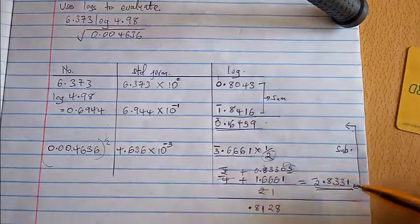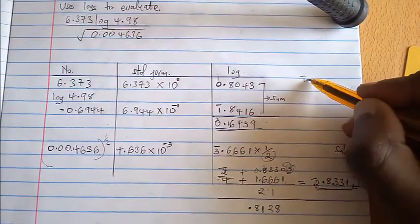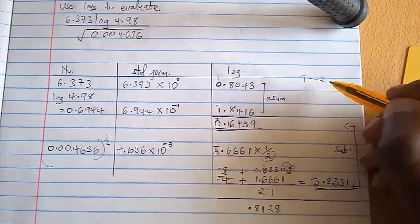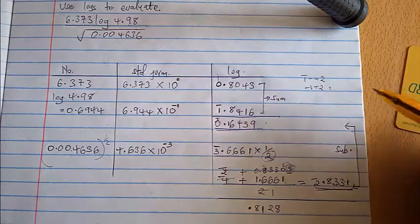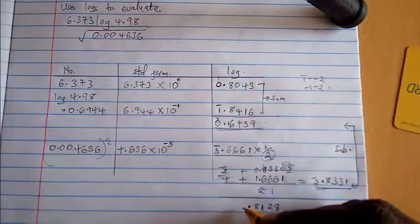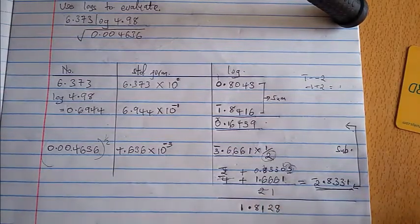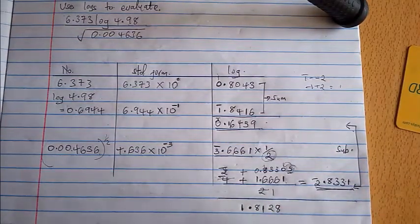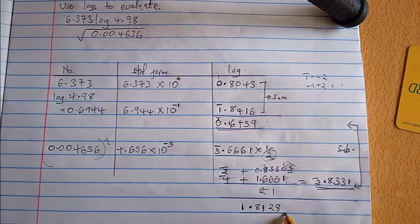Now remember there's a decimal point here and there's also a decimal point here so I'll have to put it there. Now this is bar 1 minus bar 2, so negative 1 minus negative 2, this is the same as negative 1 plus 2, and that is equivalent to 1. So we'll have here positive 1. I hope up to that point each and every one is okay.